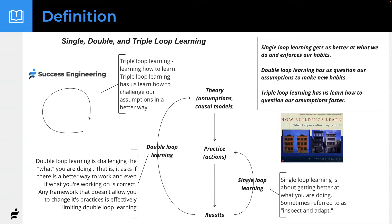Triple loop learning has us learn how to question our assumptions faster — it's this extra loop looking at the whole thing. There's also the difference between dogma and persistence: dogma is persistently working towards a goal without ever challenging your approach or your results. Persistence is working hard to get something without being attached to how you get there.